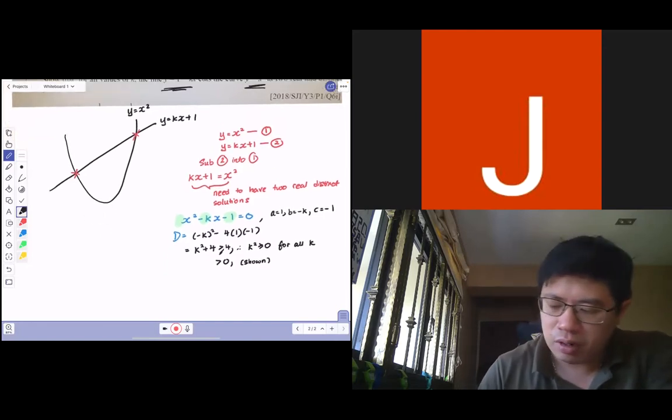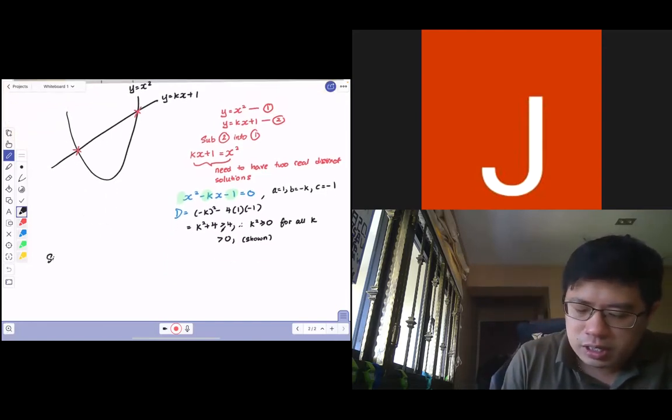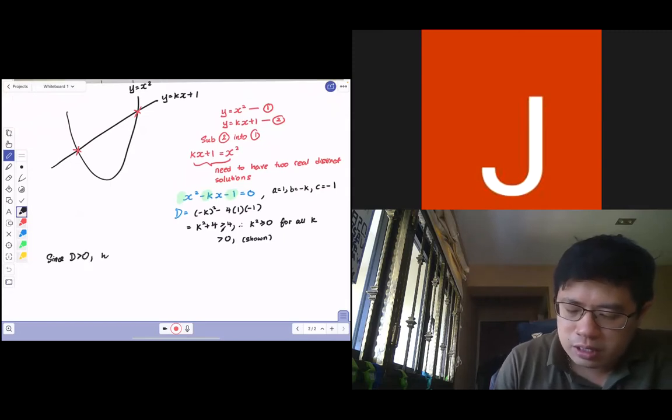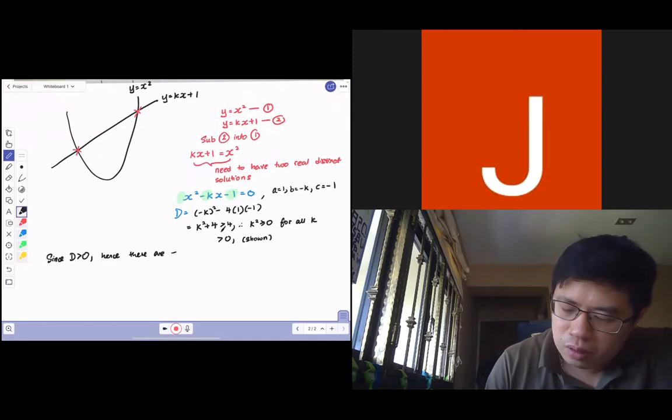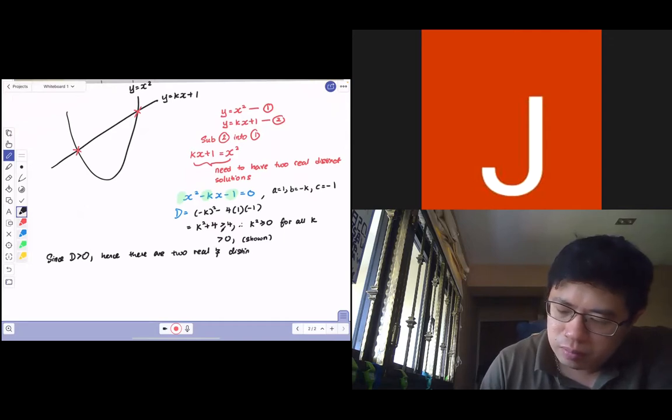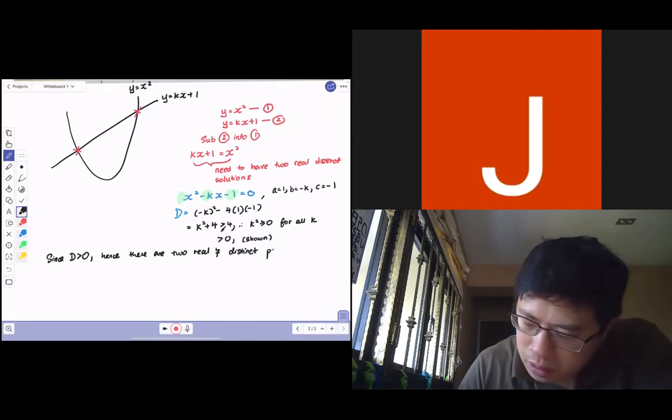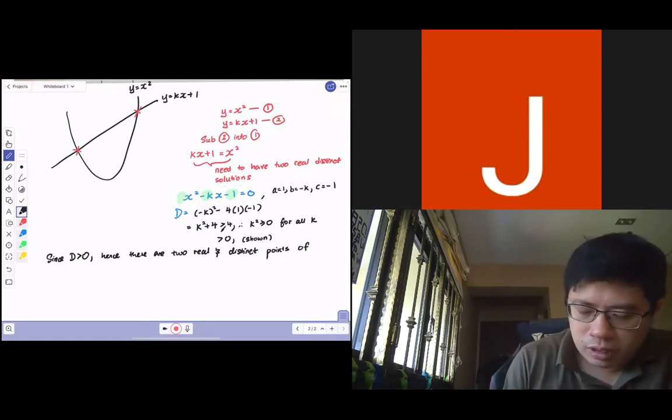Since the discriminant is more than zero, hence, there are two real and distinct points of intersection.